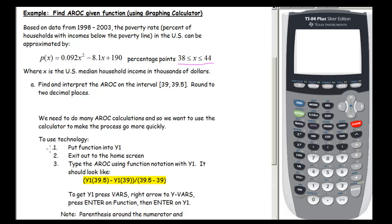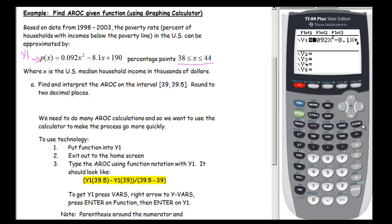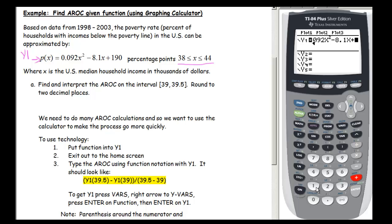First, put the function p of x into your Y1. Press Y equals — you'll see Y1 there. Clear it out and type in .092 times x squared minus 8.1x plus 190. Now you have your function in Y1. Then quit out back to the home screen using second mode.